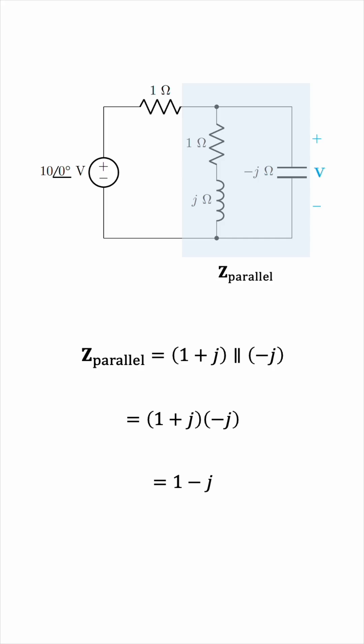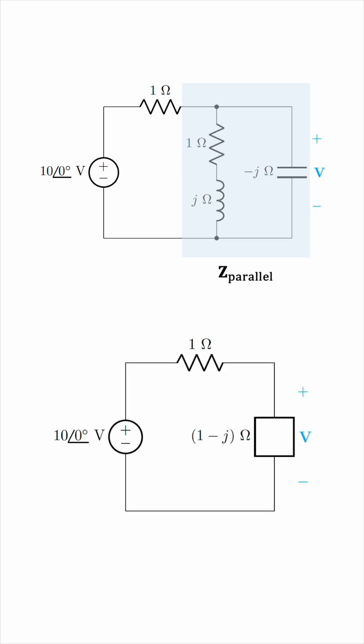Okay, so this is the equivalent impedance of this parallel chunk, so we can replace this entire thing with an impedance of 1 minus J ohms, like this. And the nice thing about this simplification is that the voltage V is still intact. We did a parallel combination, and circuit components in parallel have the same voltage, and the simplified single impedance will show the same voltage V.